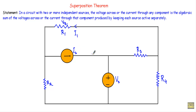Superposition Theorem states that I have to keep the independent sources active separately. That means when I keep this voltage source active, I have to turn off this current source. So at first I will keep this voltage source active — in that case I will replace this current source with an open circuit, removing it from the network.